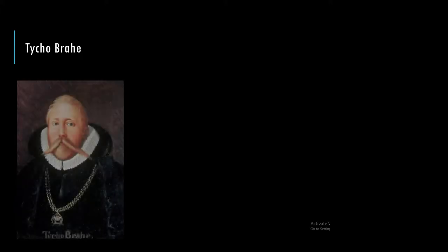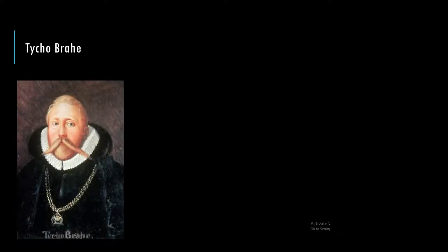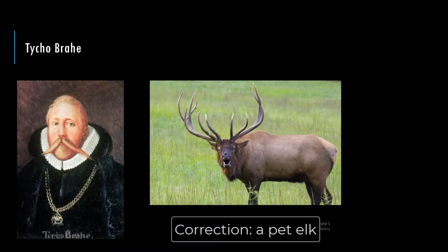Tycho Brahe was quite a character. He had a fake nose made out of gold because he lost his nose in a duel. He wrote to an acquaintance saying he couldn't lend his pet moose because it fell down the stairs and died from drinking too much beer. He was also kidnapped by his uncle and raised as his uncle's son. There are rumors that what led to his death was refusing to ask where the bathroom was at a dinner party — some sort of burst bladder problem.